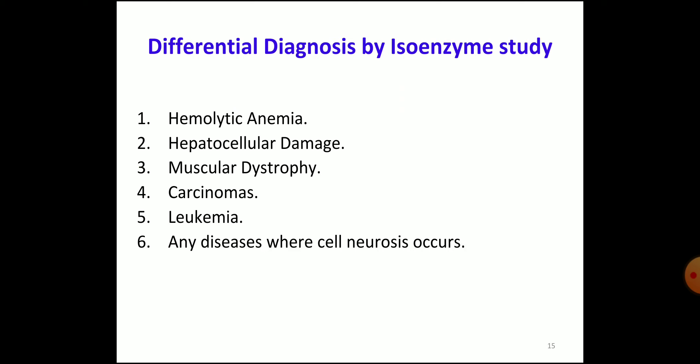Other differential diagnoses include hemolytic anemia (since LDH is also produced from RBC), hepatocellular damage (produced from liver), muscular dystrophy, carcinomas, leukemias, and any disease where cell necrosis occurs. LDH is produced from various tissues, so it increases in various diseases and is not specific for a particular condition. However, certain isoenzymes are useful for the diagnosis of specific diseases.